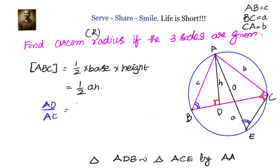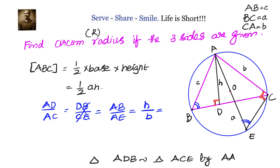We want to express h in terms of R. Here AD = h, AC = b, AB = c, and AE = 2R (the diameter). From the proportion AD/AC = AB/AE, we get h = bc / 2R. This is exactly what we needed — expressing h in terms of the sides and the circumradius.